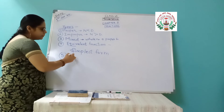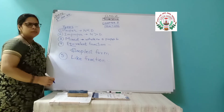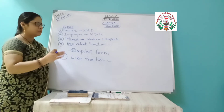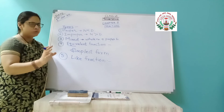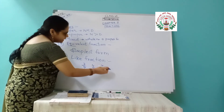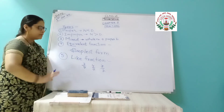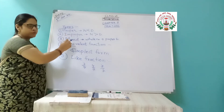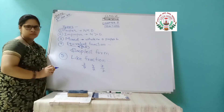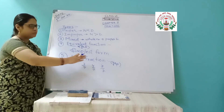The next type is like fractions. What is a like fraction? Here you have to take a group of fractions, not just one. For example 3 by 7, or 4 by 7, or 7 by 7 — where the denominators are equal or the same. Those groups of fractions where all the denominators are same are called like fractions. You are taking a group of fractions where all the denominators are the same — such groups are called like fractions.